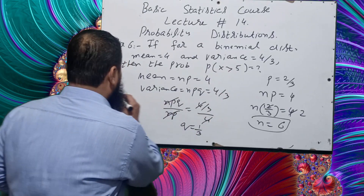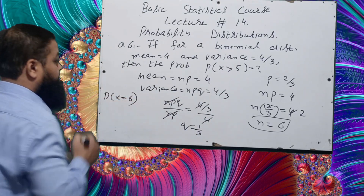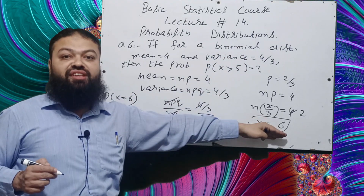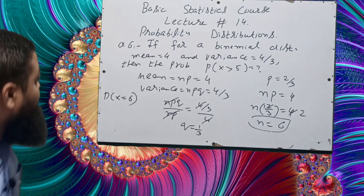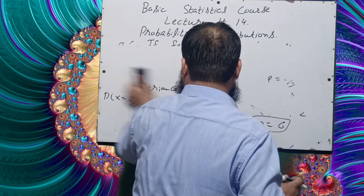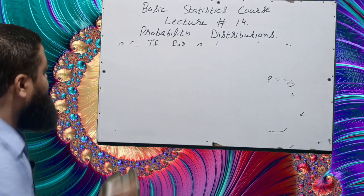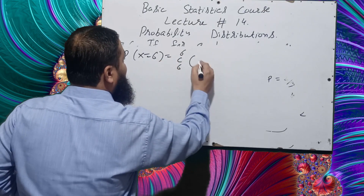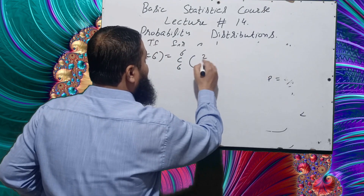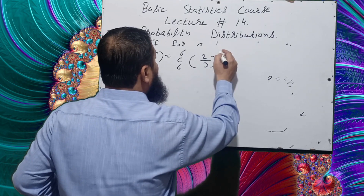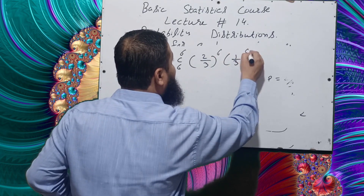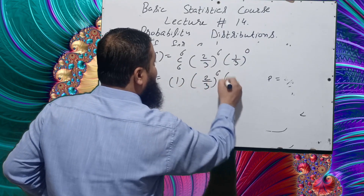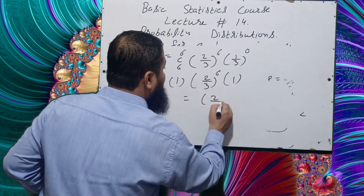Since N = 6, P(X = 6) = 6C6 × (2/3)^6 × (1/3)^0. Here 6C6 = 1 and (1/3)^0 = 1. Therefore P(X = 6) = (2/3)^6, which is the correct option in the exam.